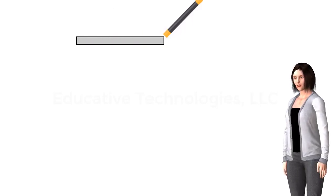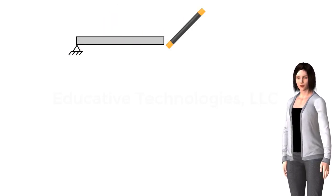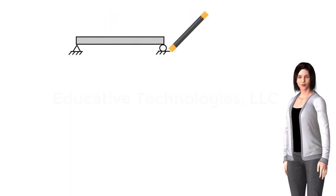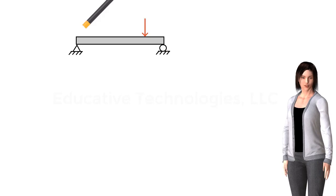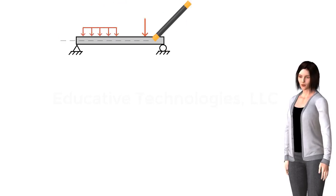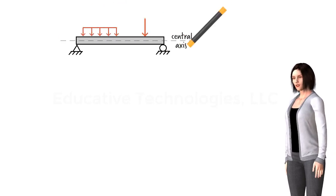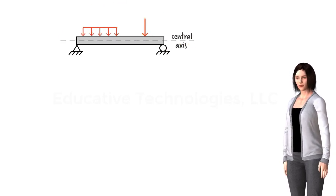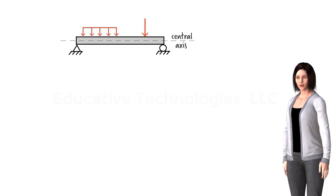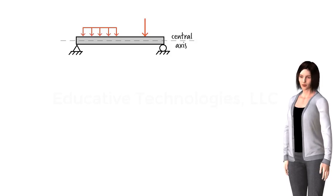A beam is a properly supported structural member capable of withstanding loads that are applied in a direction perpendicular to its central axis. In this session, we are going to discuss the type and nature of the forces internal to a beam.